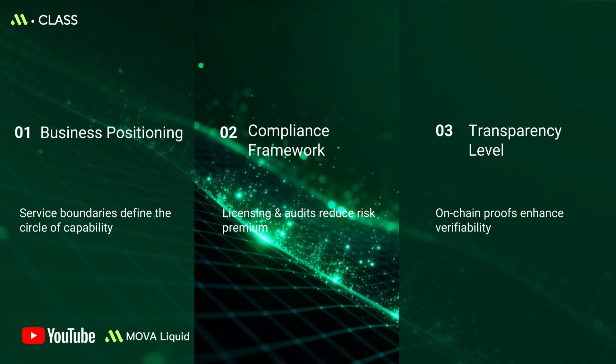For compliance frameworks, look at jurisdiction coverage, KYC, AML processes, custodial segregation, and whether independent audits or reserve attestations exist. For transparency, check whether reserves, execution paths, and risk parameters can be verified via on-chain data or third-party attestation.